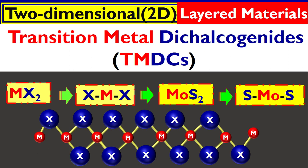Look at the crystal structure. This material is basically a three-atom-thick material. This is a chalcogen atom layer, then another chalcogen atom layer, and between these two chalcogen layers we have the transition metal — and that arrangement makes transition metal dichalcogenides.